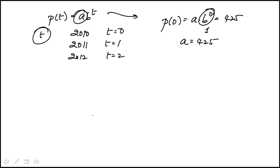Essentially this coefficient is the population at the beginning. That's always the case with these exponential functions. So the population function is 425 times b to the power of t.